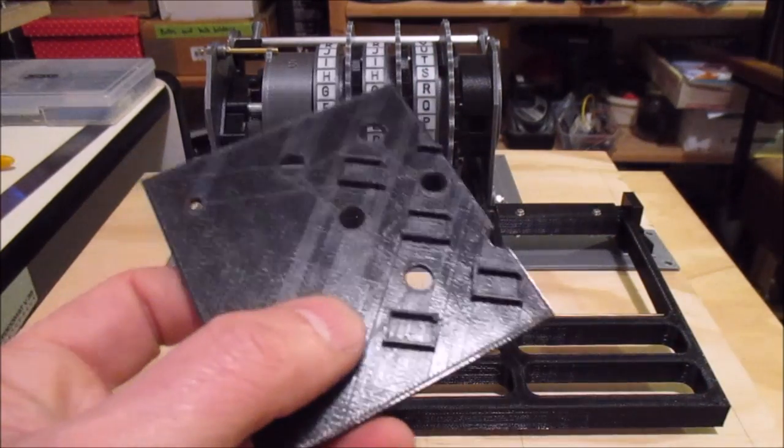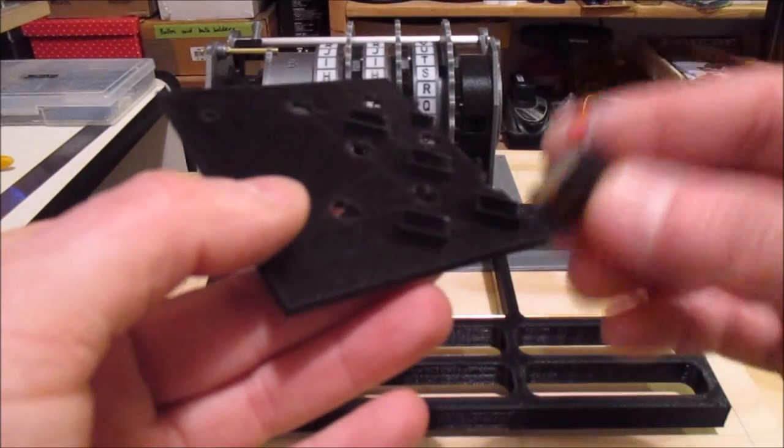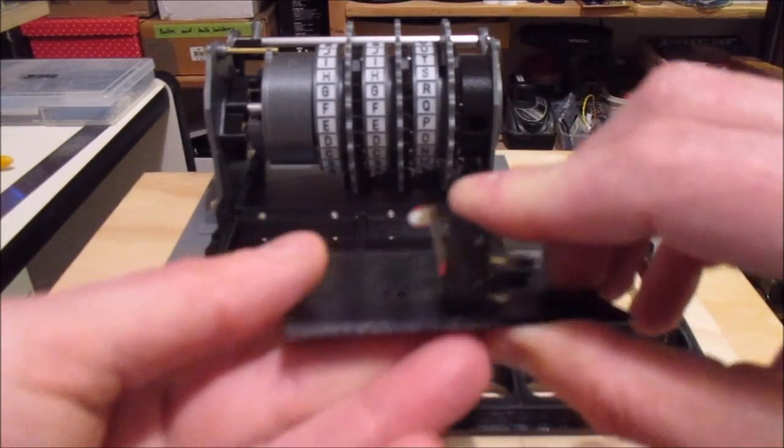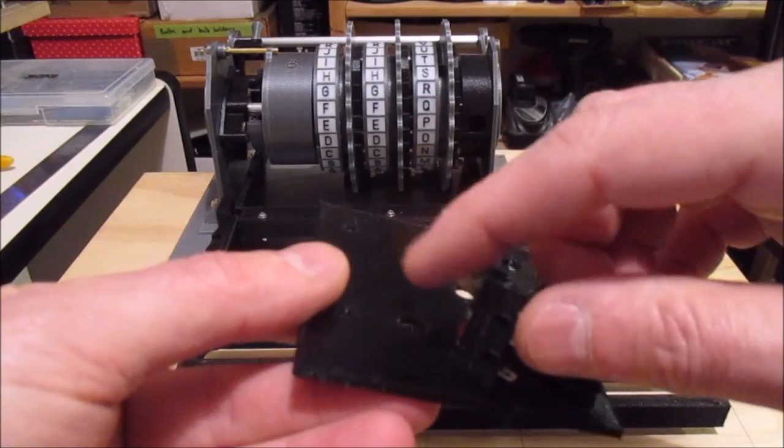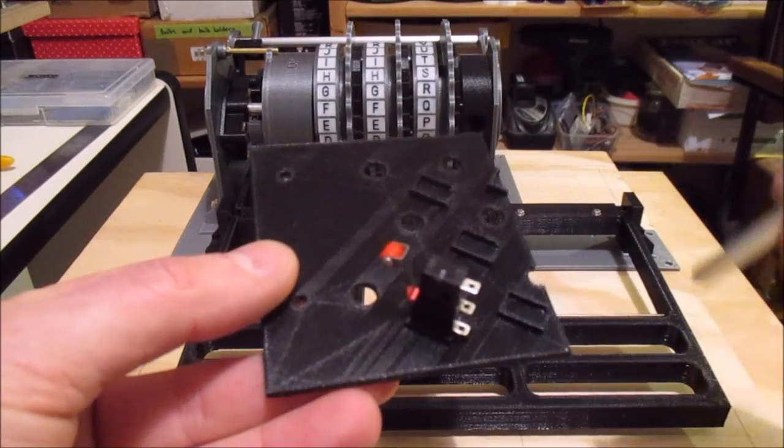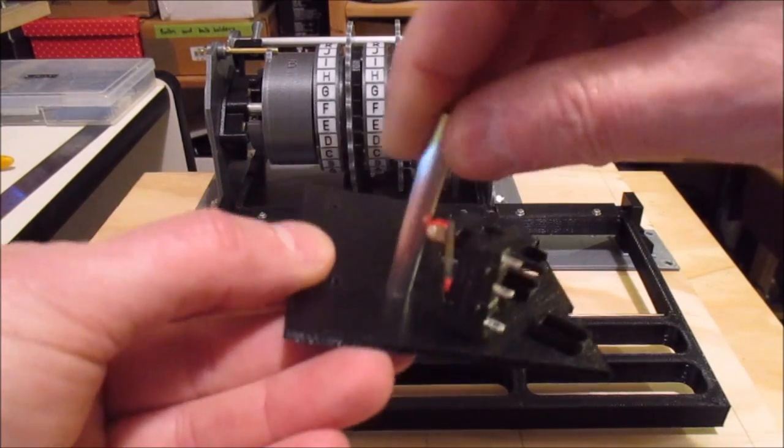So what I've done is I printed in these little pockets and those are exactly the right shape for the micro switches to be a press fit into. You can see the switch moves there and then the shaft will go through the hole.